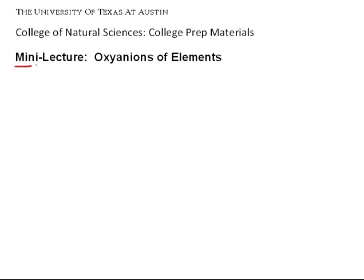In this mini-lecture, we are going to look at the oxyanions of elements. Oxyanions are a type of polyatomic anion. We have a table of some common ones that you'll come across in your general chemistry class, and you should take a look at those on our website and begin to memorize them.